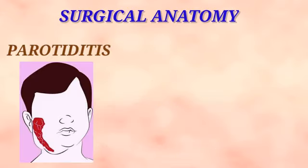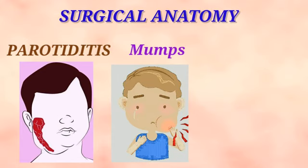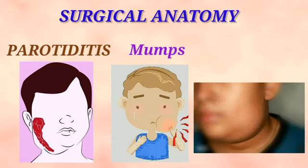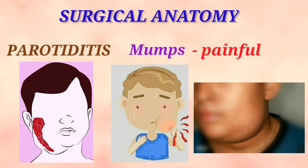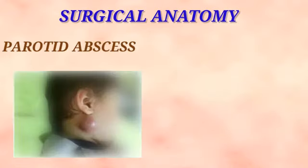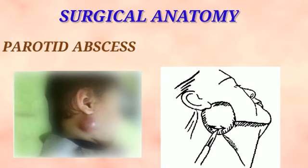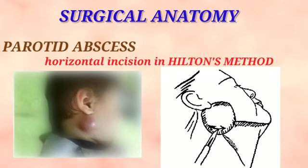Inflammation of the parotid gland is called parotiditis and is mostly caused by viral infection — the condition known as mumps. The parotid gland is covered by a very tough fascial sheath, and because of this, inflammatory swelling produced by parotiditis is very painful due to the unyielding nature of the fascial capsule and also due to the rich sensory nerve supply. A parotid abscess is always drained by a horizontal incision and never by a vertical incision, because the branches of the facial nerve within the gland radiate horizontally. This small horizontal incision in the parotid fascia avoids injury to the branches of the facial nerve and the method is called Hilton's method. A vertical incision may damage all the branches and hence is not advisable.